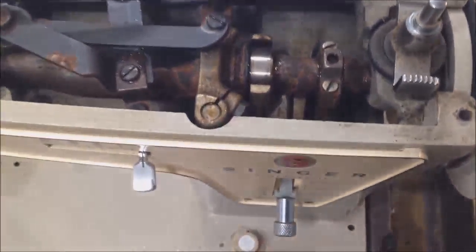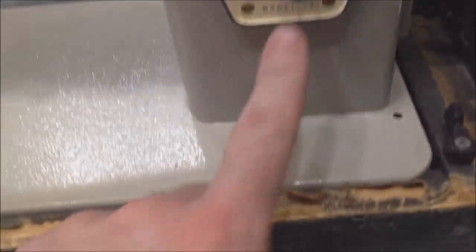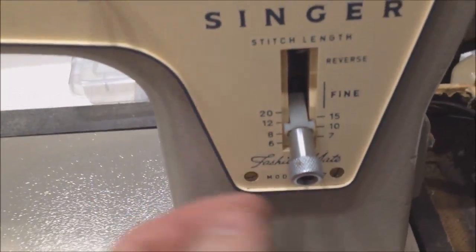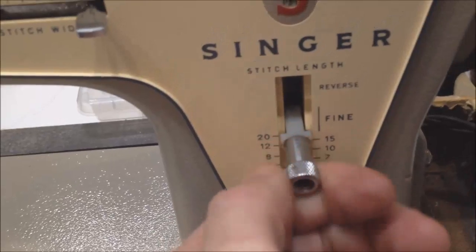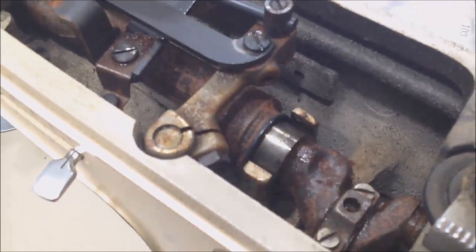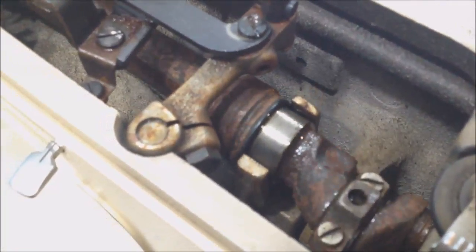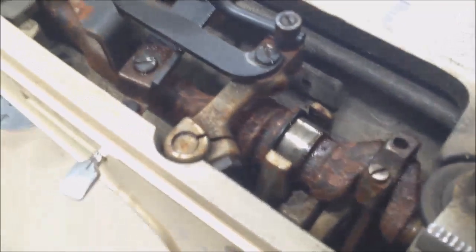This one here operates the feed dogs, and you can control how fast the feed dogs pull by this lever here. If you take a look at it, it has essentially stitch length, and it can go from very short to fine to coarse, and so as you pull it up more, the stitch length gets longer. That controls this cam here, and it controls the throw of this back and forth with that lever, and that controls the amount of push back and forth that this actually puts on to the feed dogs.